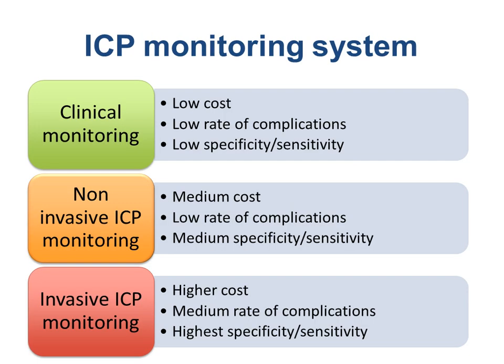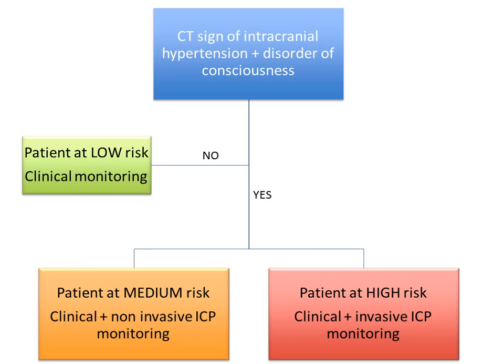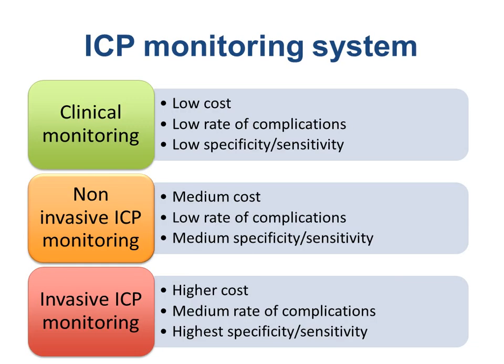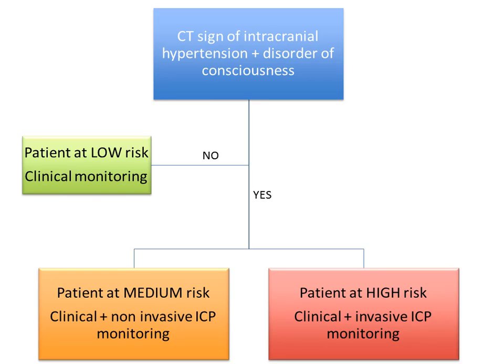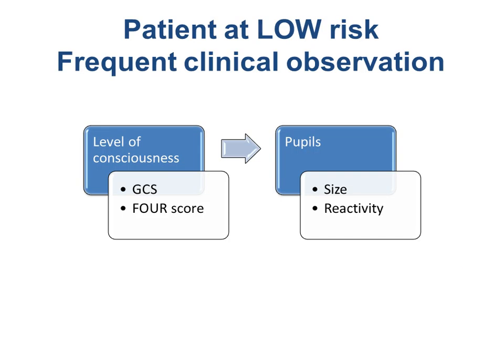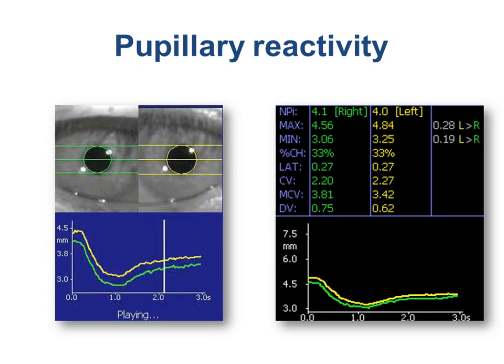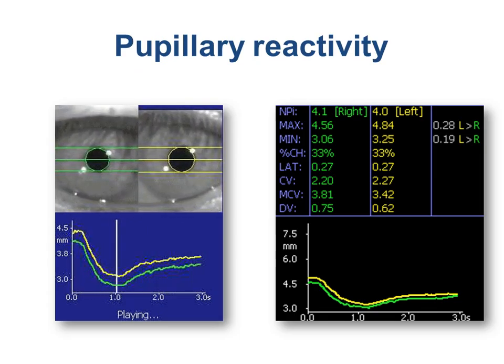In my mind, I classify monitoring into three tiers: clinical monitor, non-invasive ICP, and invasive ICP — increasing cost, increasing complication, going from green to red. If you have a CT scan with signs of intracranial hypertension and disorder of consciousness after a trauma or an infection, and the patient is at low risk for high intracranial pressure, they could be monitored clinically. Clinically means evaluation of consciousness and pupils — you can use GCS, FOUR score, whatever you want — but you have to evaluate the evolution of the lesion and probably the pupil reactivity.